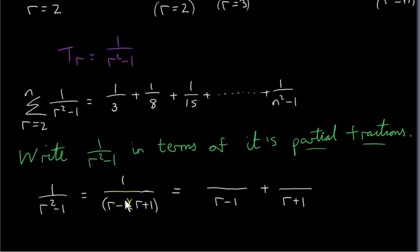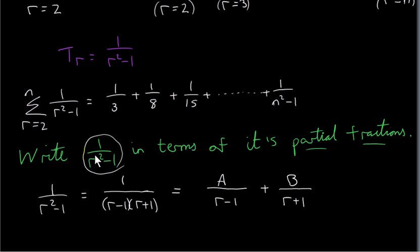We break the single fraction into two partial fractions with denominators (r minus 1) and (r plus 1). We call the unknown numerators A and B — constants that don't depend on r. We find A and B by combining the two fractions back into a single fraction and comparing with the original. The reason for doing this is that when we write the general term in partial fraction form and then do the summation, we get a pattern that reduces down considerably.